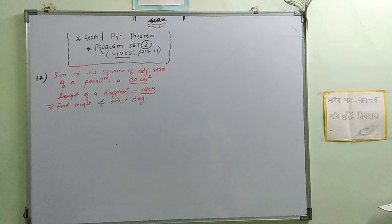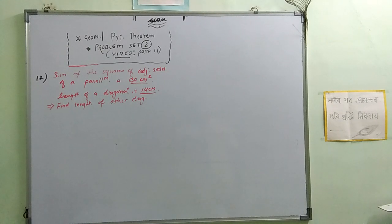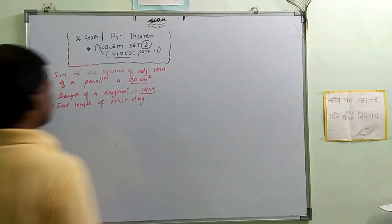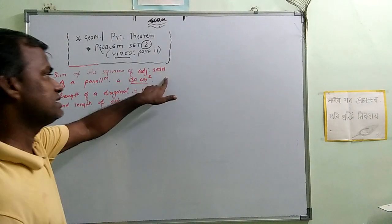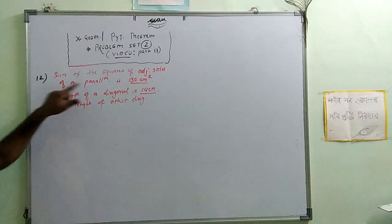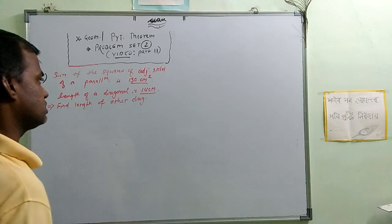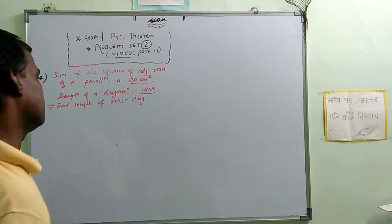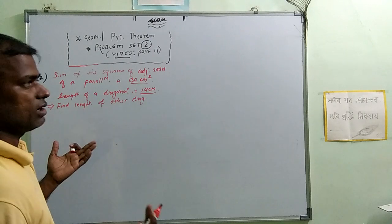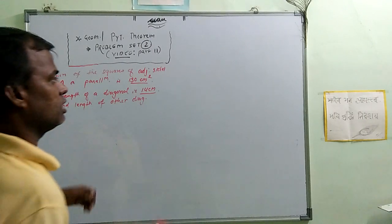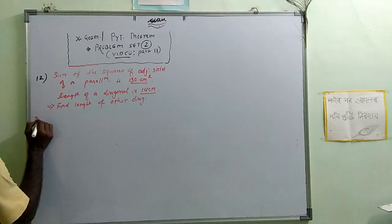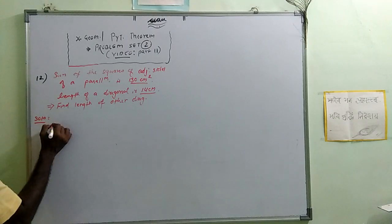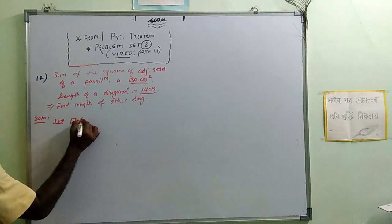Dear students, next question is question number 12, which is a very easy question. They have not given the figure, so let's draw according to the given information. The sum of the squares of adjacent sides of a parallelogram is 130 centimeter squared. Let the parallelogram be ABCD.